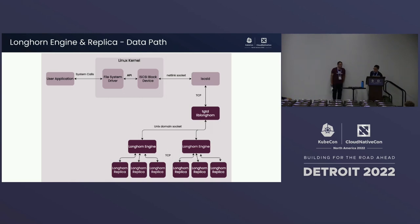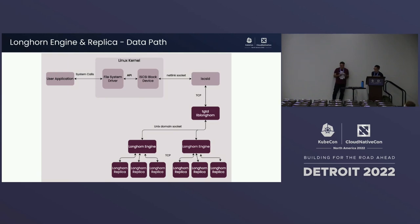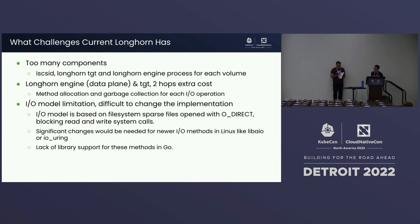The data path diagram shows: user application IO goes into the Longhorn volume, which sits on top of a filesystem, then into the iSCSI block device exposed by Longhorn. It goes to iSCSI-d, the host library, to write to the Longhorn volume. It runs through TGT and uses the lib-Longhorn library to communicate with each engine — the volume controller — which then passes IO downstream to the Longhorn replicas.